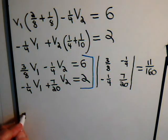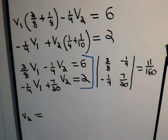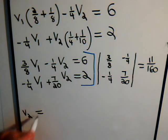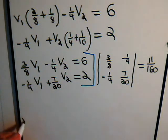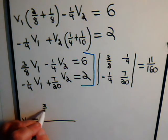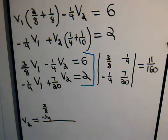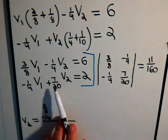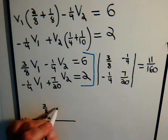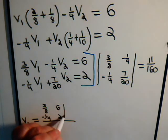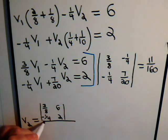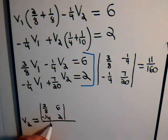the V2 column is replaced by this column. So V2, this stays the same, so we have 3/8 and minus 1/4. And then replace this column with this column, 6 and 2, and that gets divided by 11 over 160.